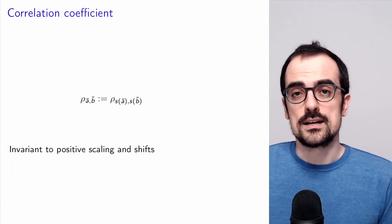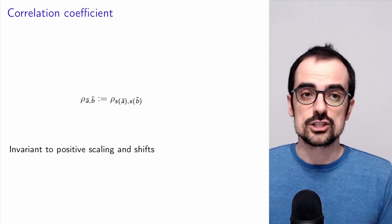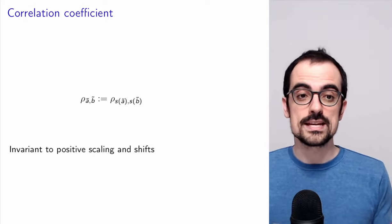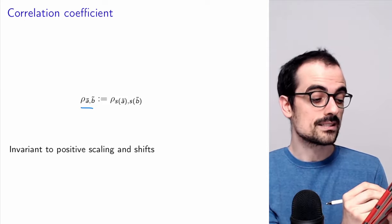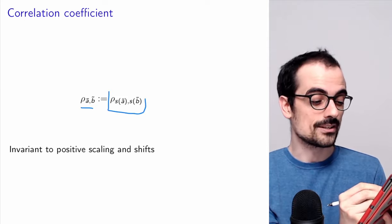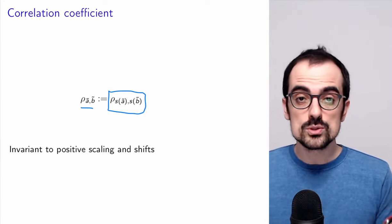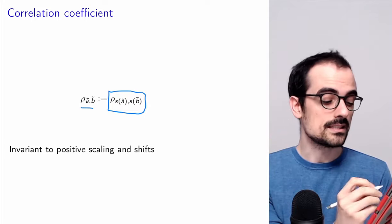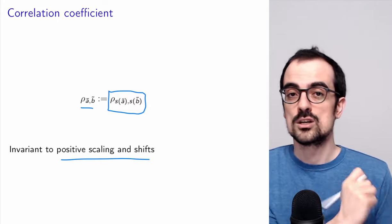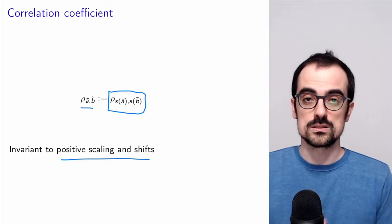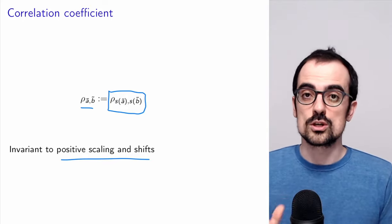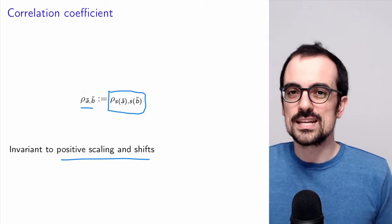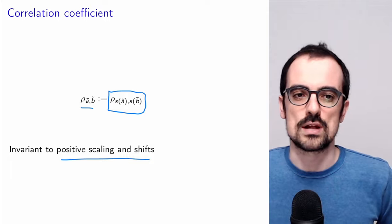We can generalize the definition of the correlation coefficient beyond random variables with zero mean and unit variance by defining it as the correlation coefficient between the standardized variables. This is very useful because it gives us a measure of linear dependence that is invariant to positive scaling and shifts. If we scale or shift each of the variables — as long as the scaling is positive — we keep the same correlation coefficient, which makes sense because linear transformations should not change the linear dependence between two random variables.